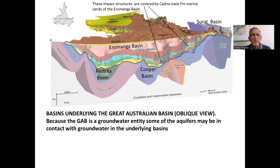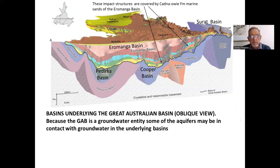You can see from the arrows that you're in the marine portion of the Cadnawi Formation, and this shows the basins underlying the Great Australian Basin. Some of these, where contact is suitable, leak groundwater into the Eromanga Basin. And of course, that's where gas and particularly oil is presumed to have percolated from those underlying basins into traps in the Eromanga.